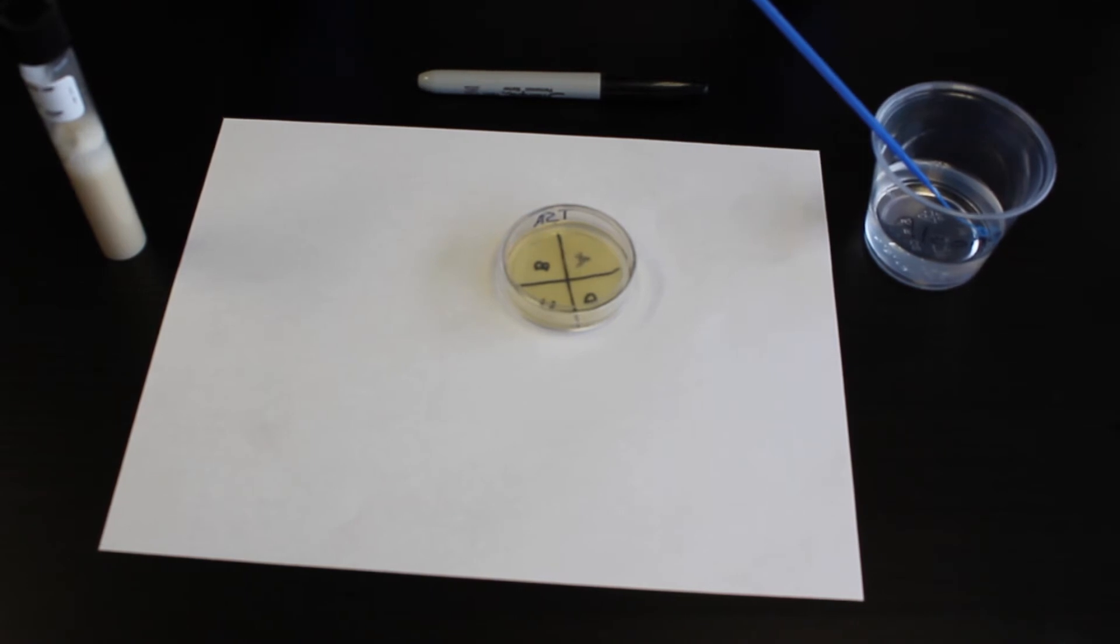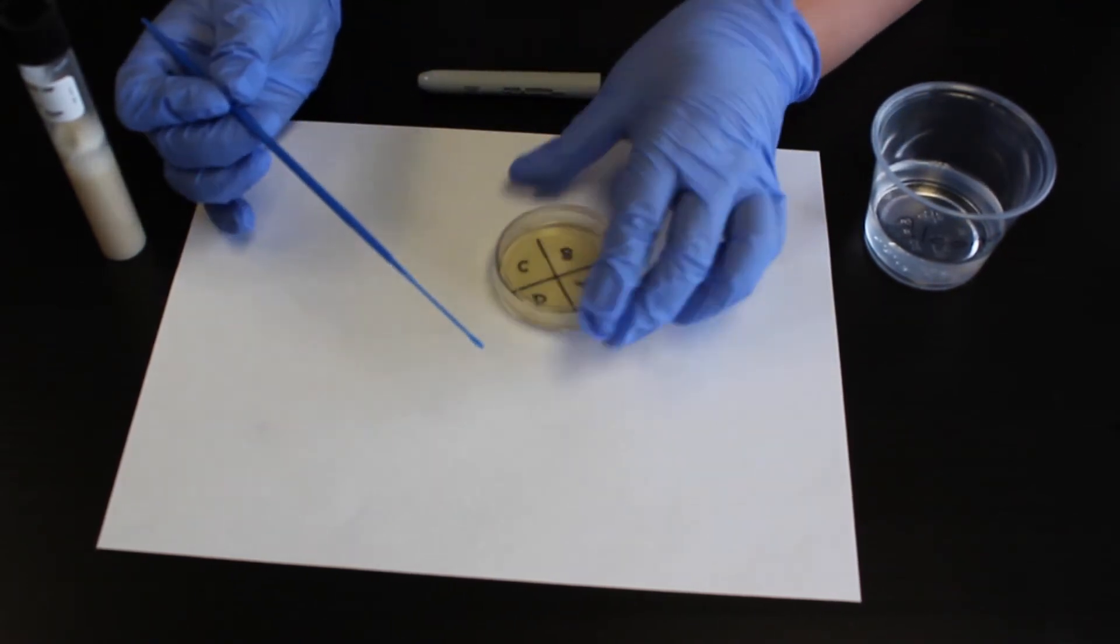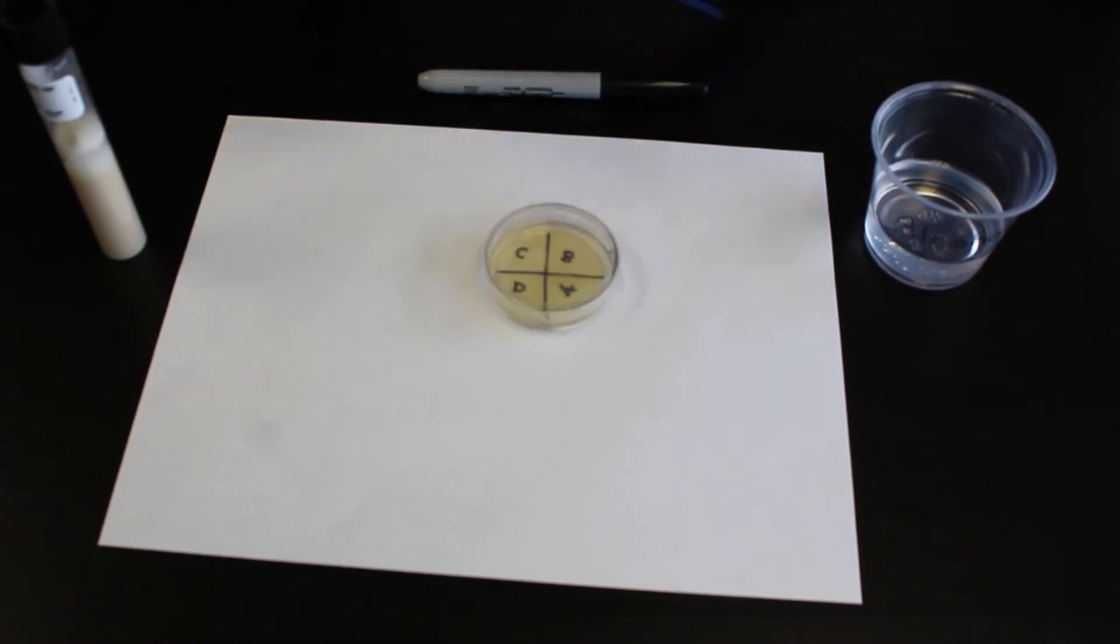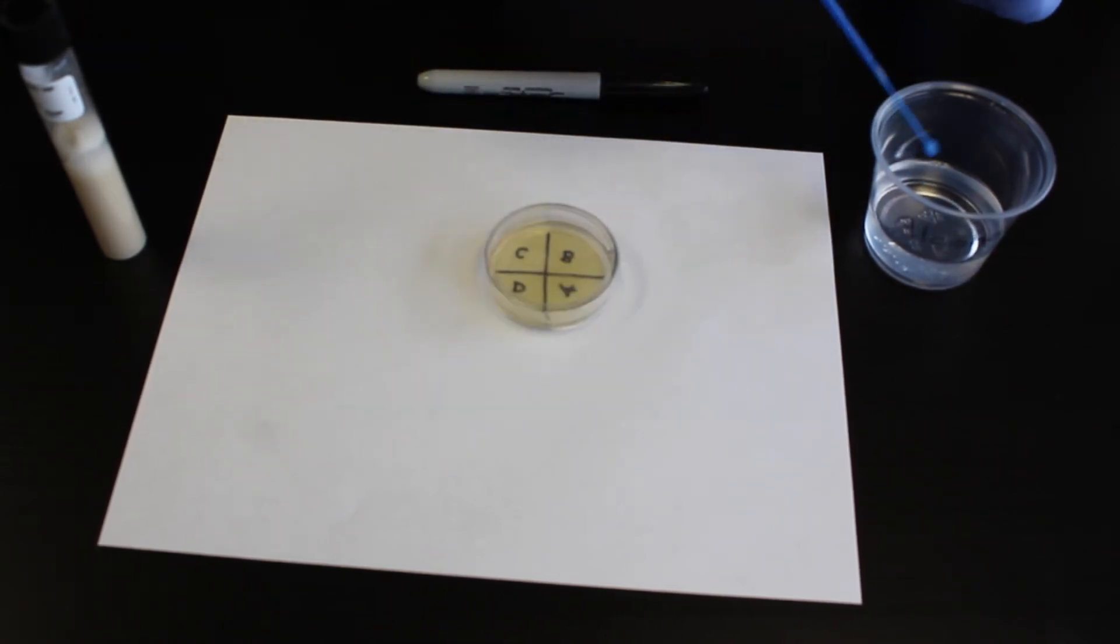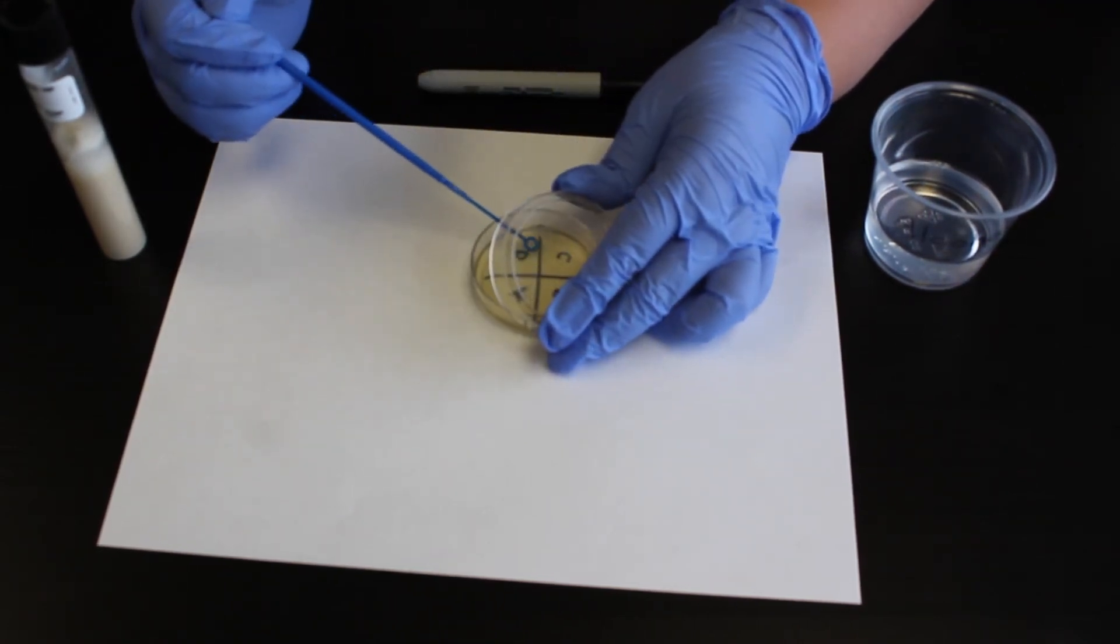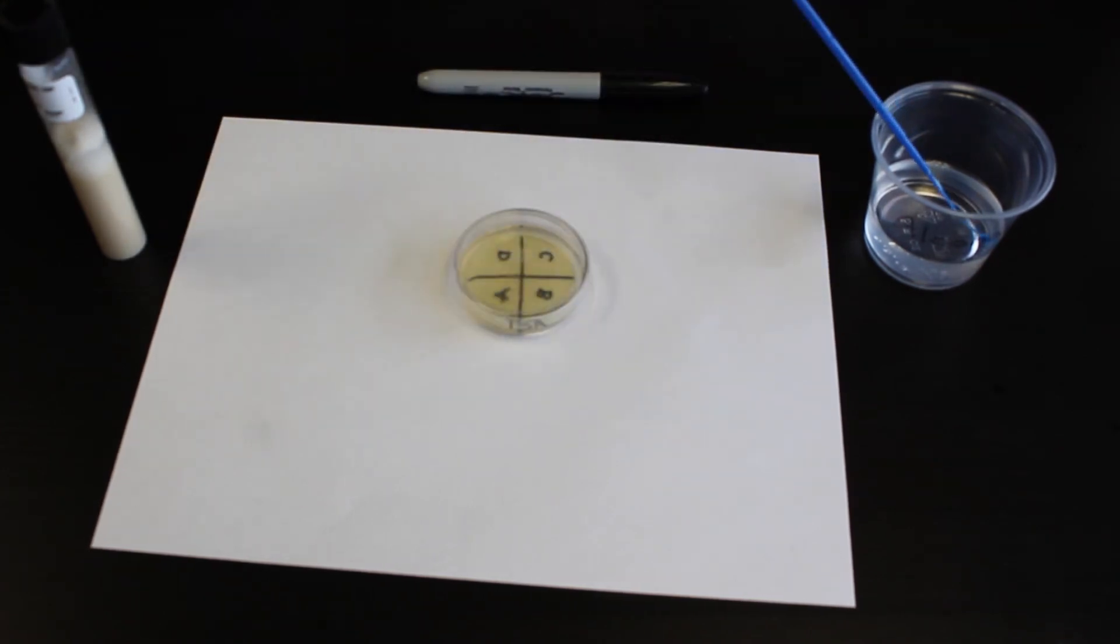Repeat until quadrants C and D are streaked. Store the streaked plate agar side up in the incubation location.